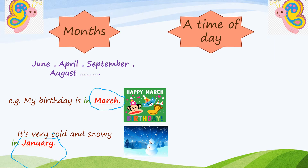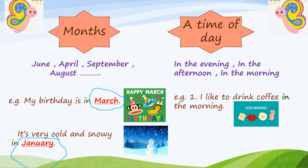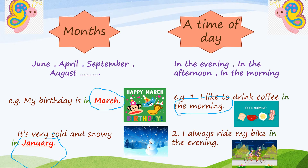Also, if we have a time of day in our sentence, we must put 'in' before it — such as in the evening, in the afternoon, and in the morning. For example, I like to drink coffee in the morning. The morning is a time of day, so we must put 'in' before it. Second example: I always ride my bike in the evening. The evening is a time of day, so we put 'in' before it.